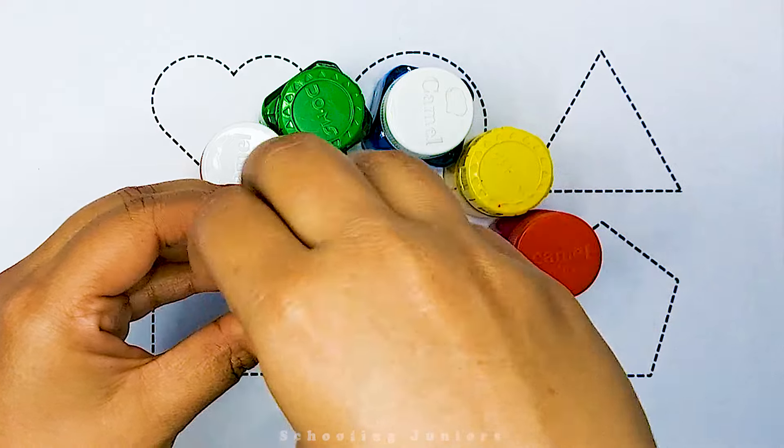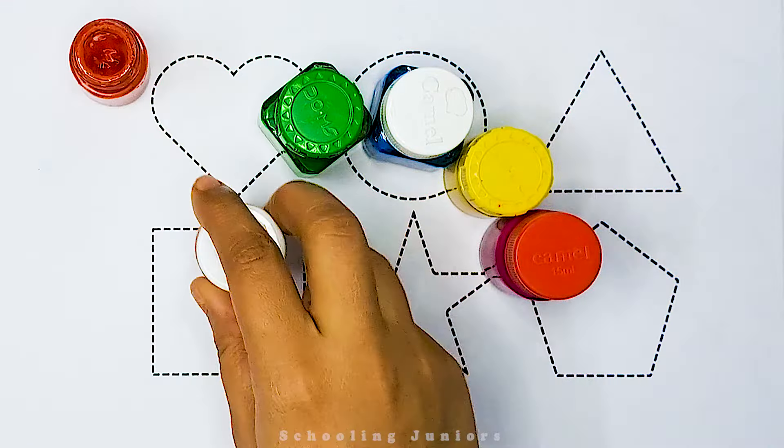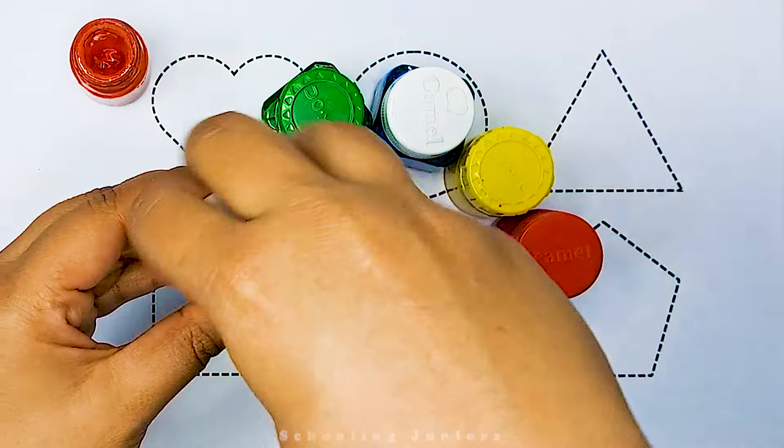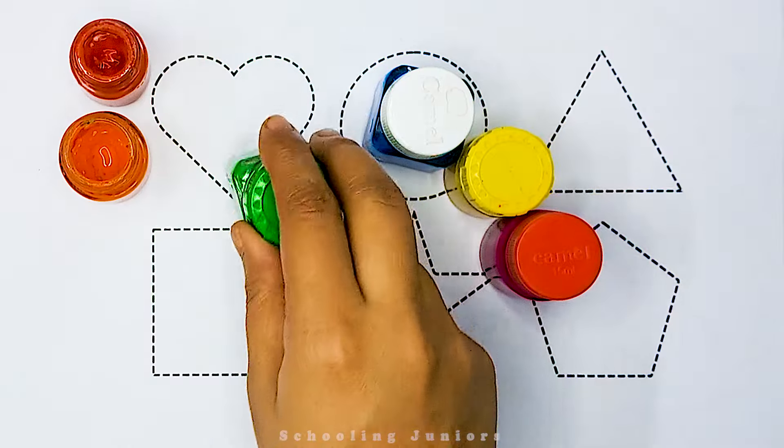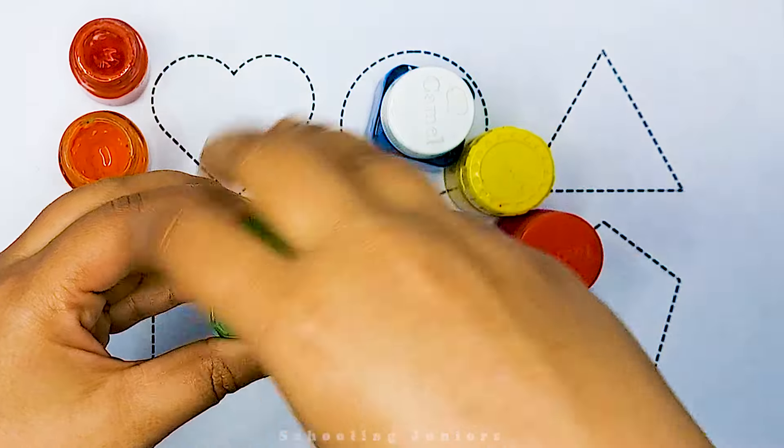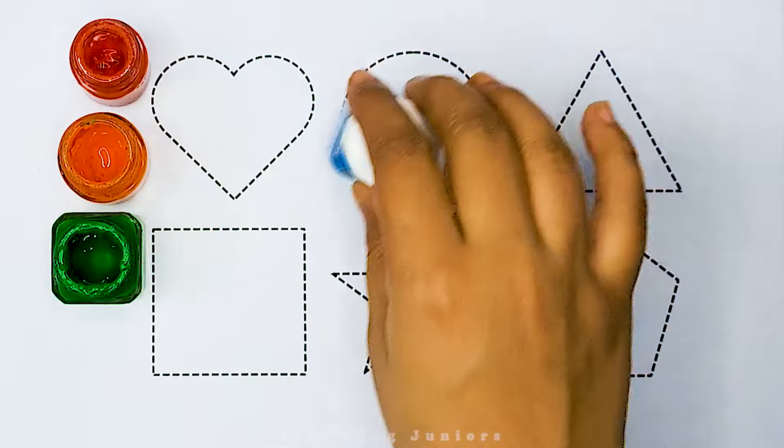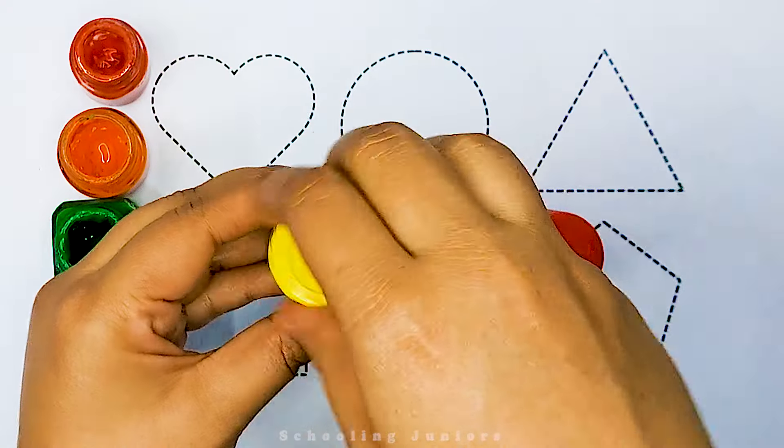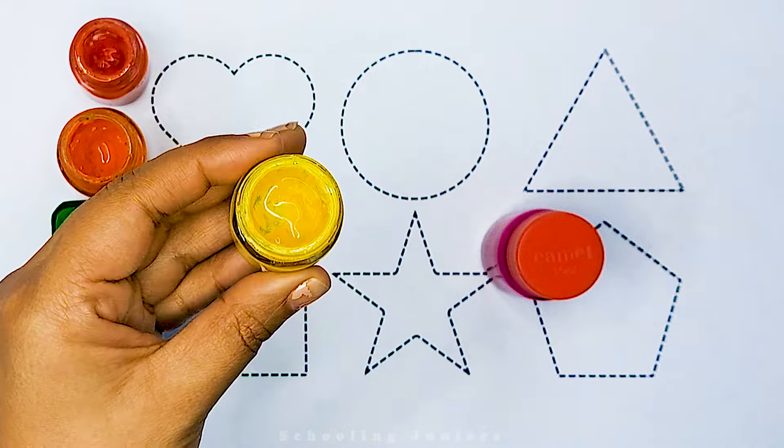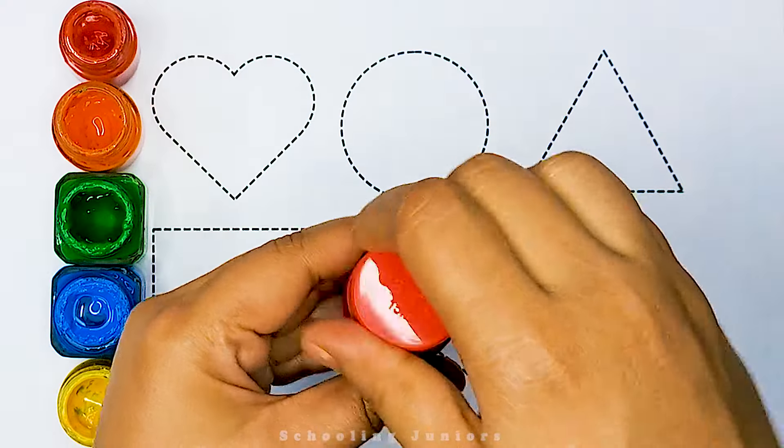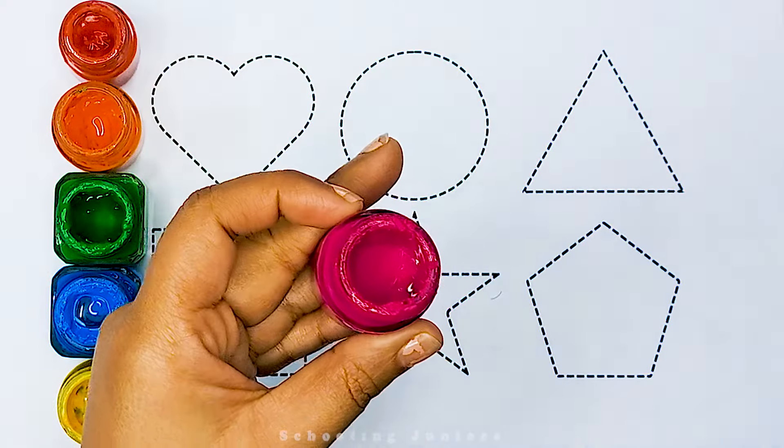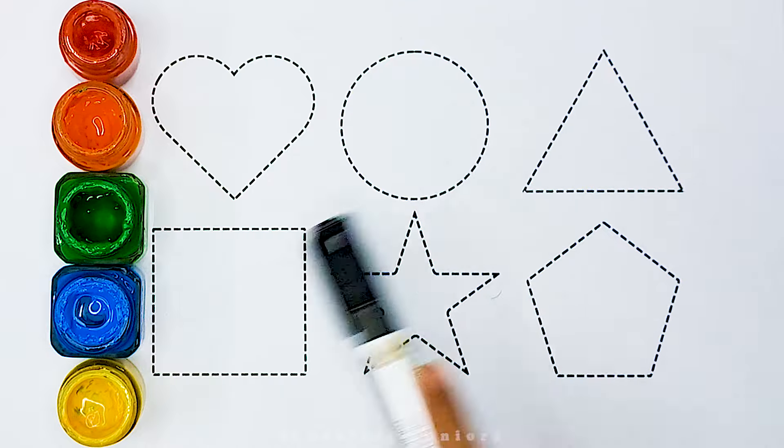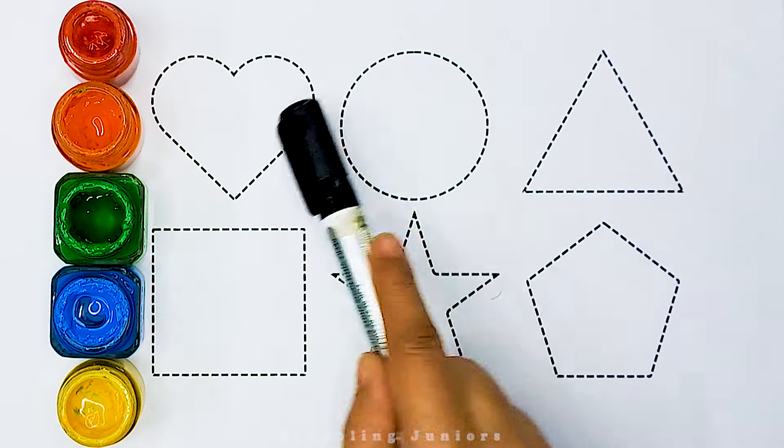This is red color. This is orange color. This is green color. This is blue color. This is yellow color. This is pink color. Now let's learn to draw some 2D shapes.